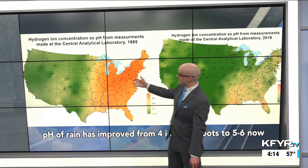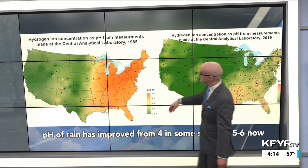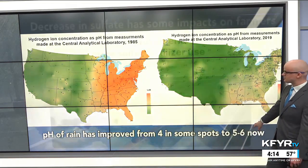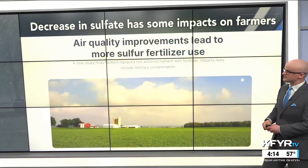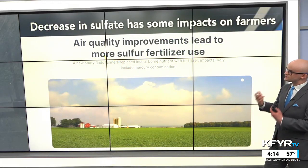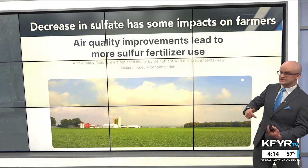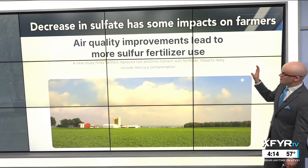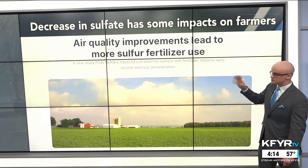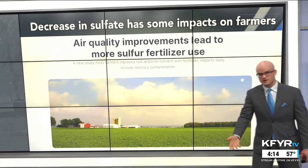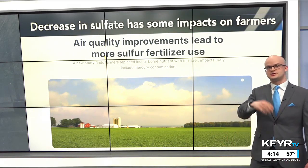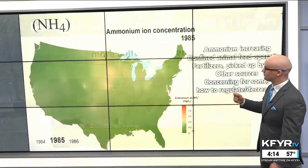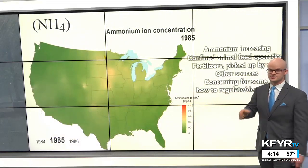We've really decreased that sulfate in the atmosphere, increasing the pH of our rainfall and making it more basic — less acidic — meaning the rainfall is a lot cleaner. Looking at pH levels from 1985 to today, that has increased drastically, which is a good thing. However, the dramatic sulfate decrease has also had some impact on farmers, as some have had to apply more sulfur-based fertilizers.